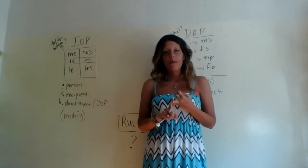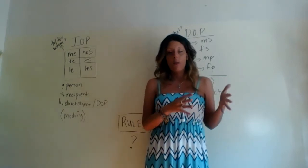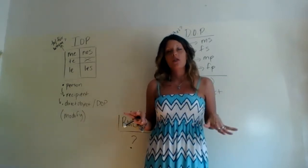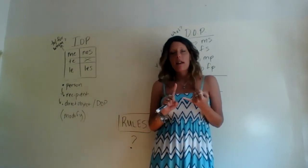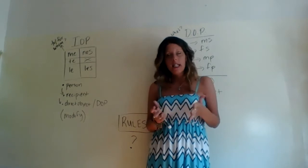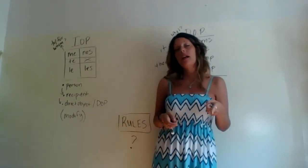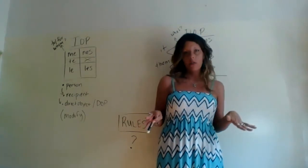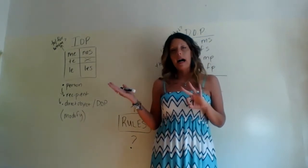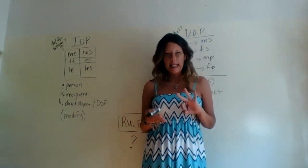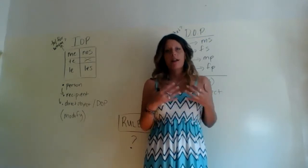Rule number two is the opposite of that: object pronouns always precede — or come before — negative commands, like a 'don't do it' kind of thing. Remember, when I say commands, I mean all kinds of commands.